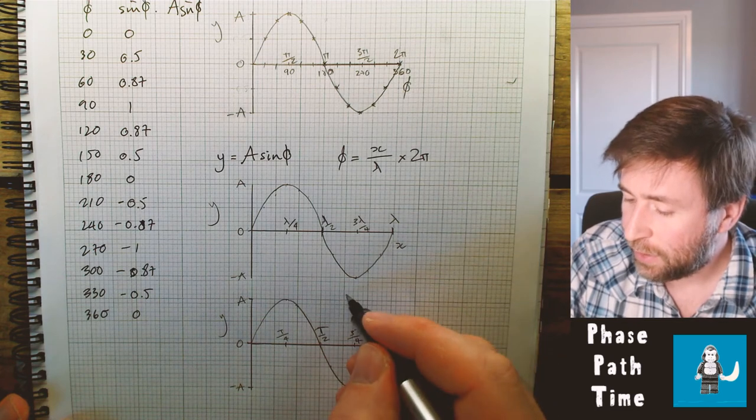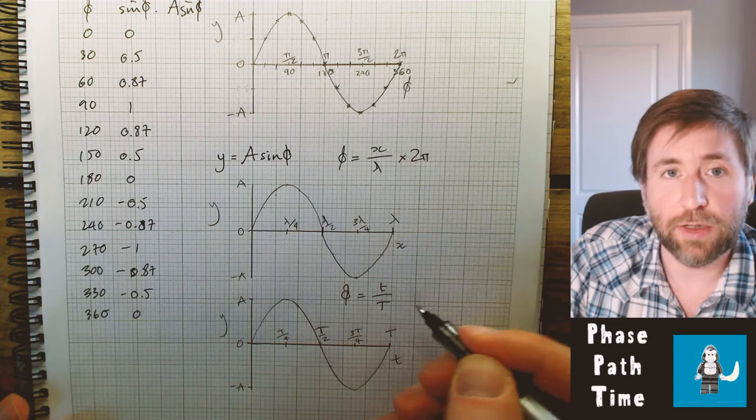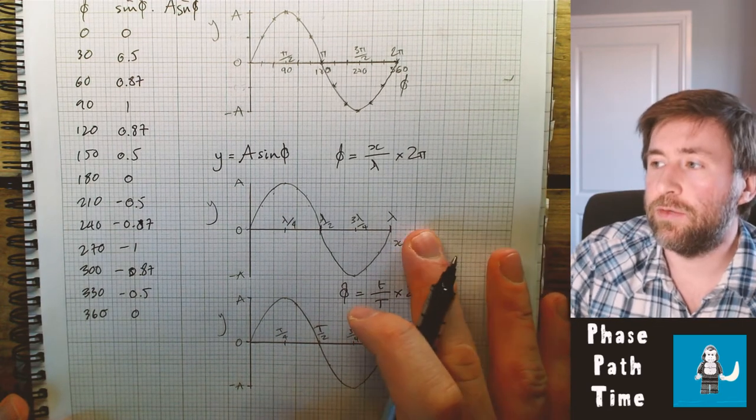For the time period graph, then the phase is what fraction of the time period are you multiplied by 2pi? So if I want to write an equation for this line, then I'm just going to substitute all this in instead of my angle phi here.